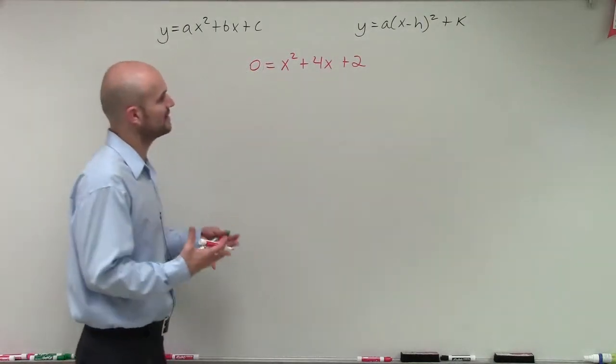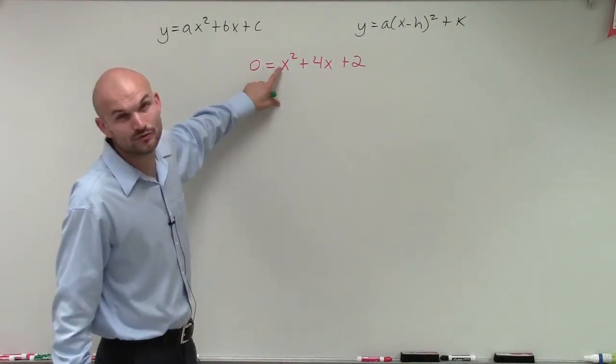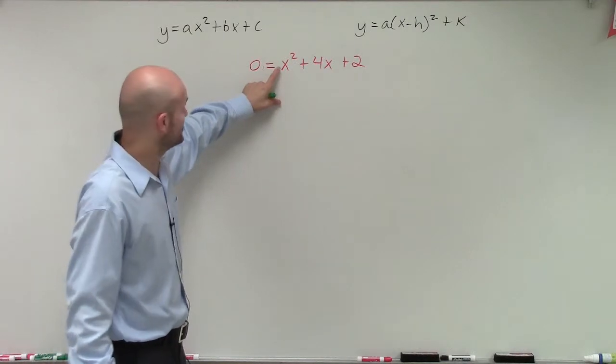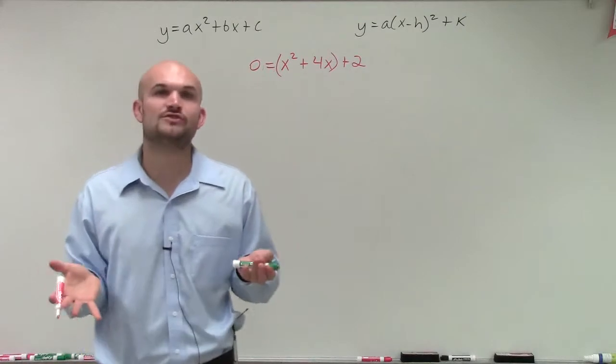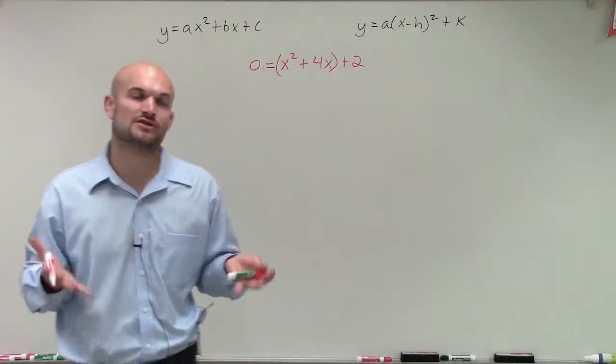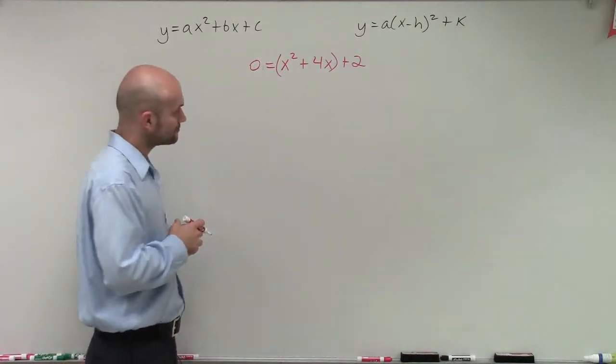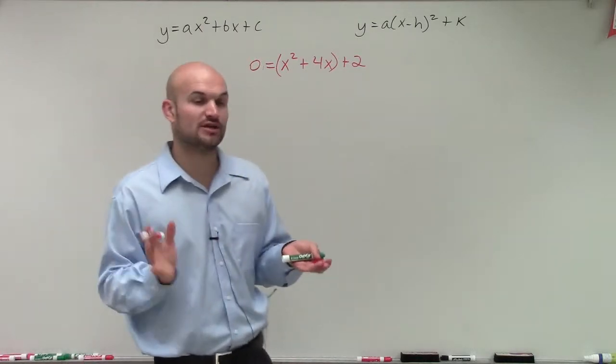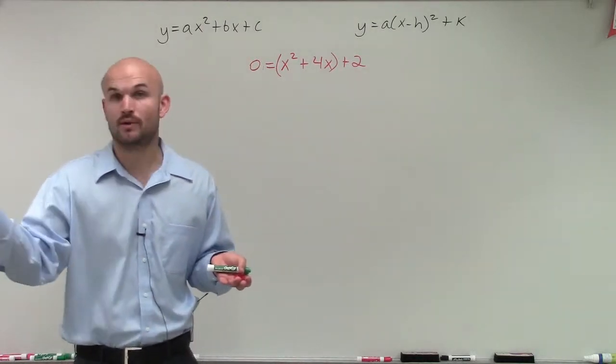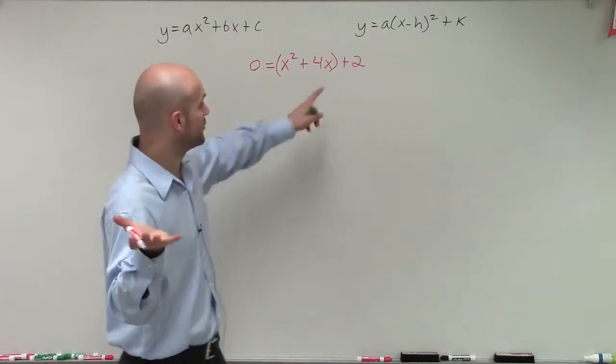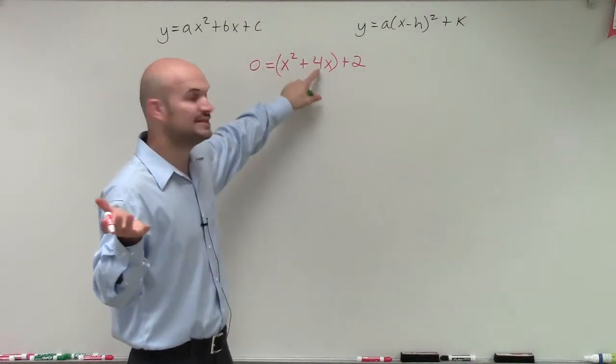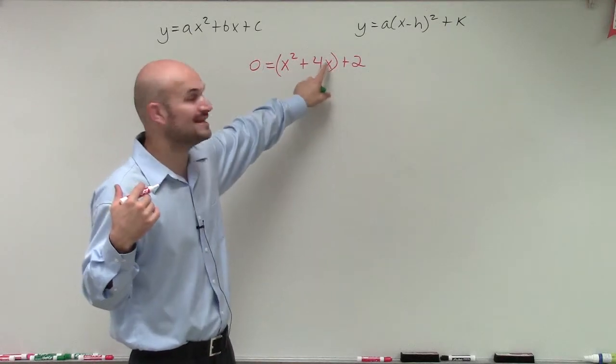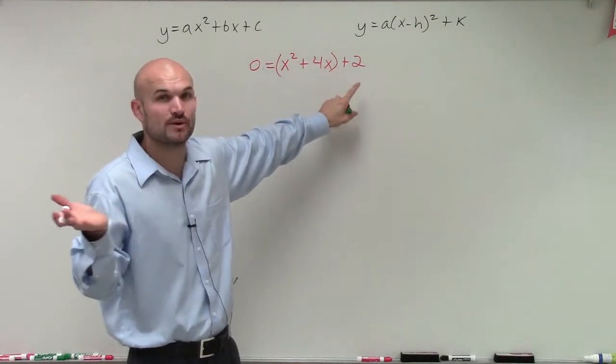And the first important thing that we need to do is make sure we have our a is equal to 1, a positive 1, which in this case it is. Then I'll just apply some parentheses. And then inside those parentheses, what we need to do is create a perfect square trinomial. And remember, a perfect square trinomial is when your last term is a squared number. So therefore, we look at 2 and we say 2 is not a squared number. So this is not a perfect square trinomial.